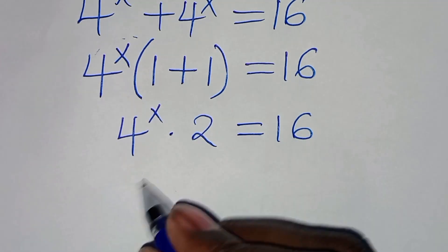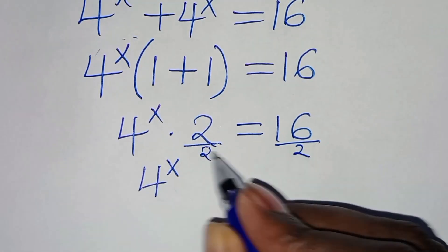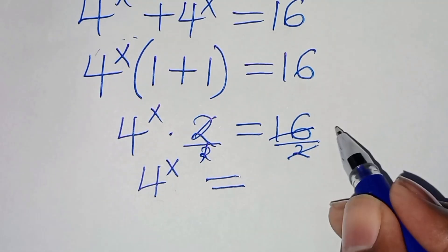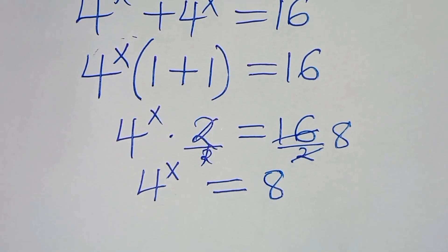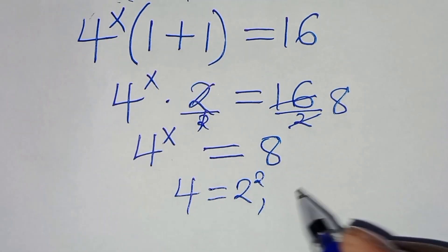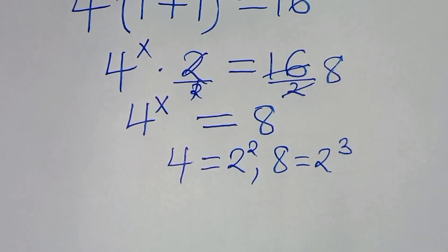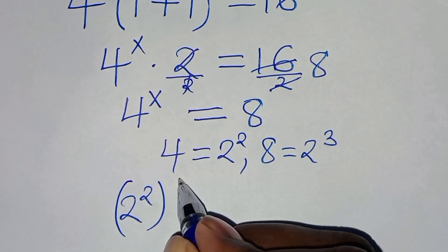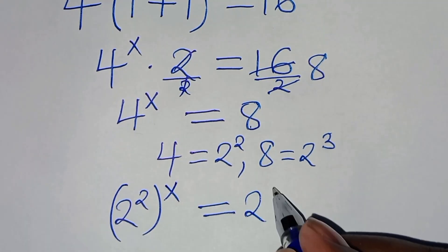This implies we have 4 to the power x. Let's divide both sides by 2, so that 4 to the power x is equal to 16 divided by 2, which is equal to 8. We can express 4 as 2 to the power 2, and we can express 8 as 2 to the power 3.